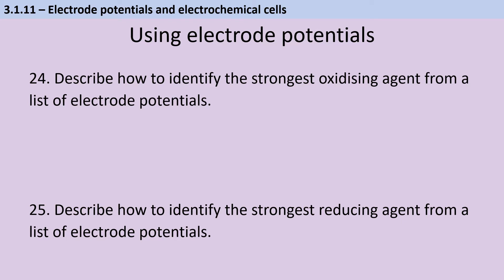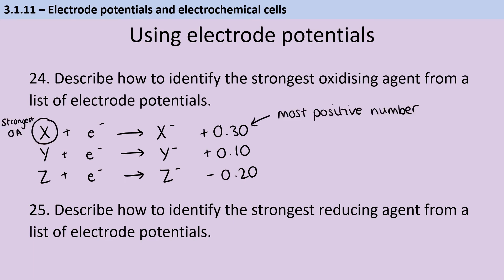Electropotentials are conventionally written as reduction potentials. So here are three hypothetical elements that are each being reduced by gaining an electron. And then you've got their values for their electromotive force to the right hand side. So if we want to identify the strongest oxidizing agent, an oxidizing agent is going to oxidize something else. In other words, it's going to be reduced itself. So what we're looking for is what's going to generate the largest, most positive electromotive force. So we're looking for X, it's got the most positive number, therefore X is the strongest oxidizing agent.